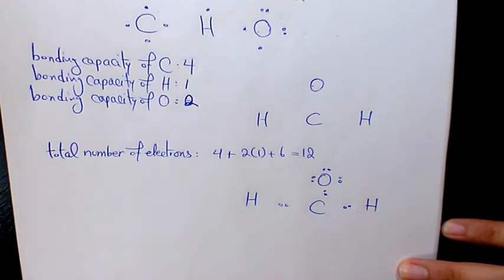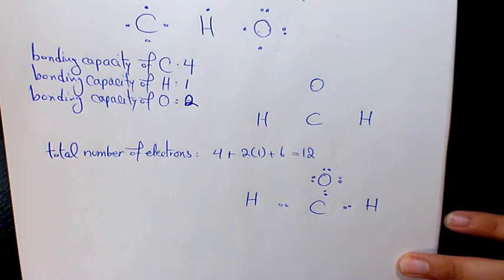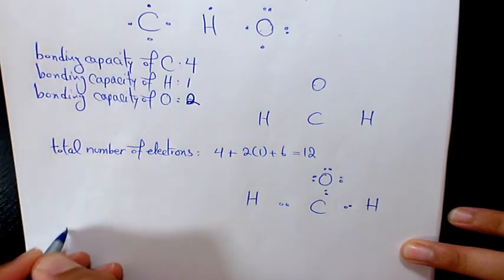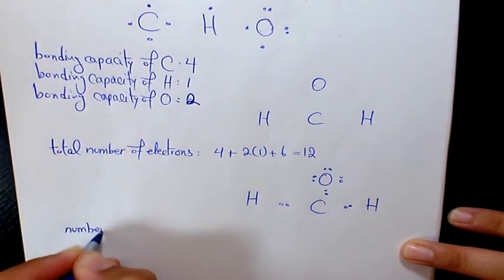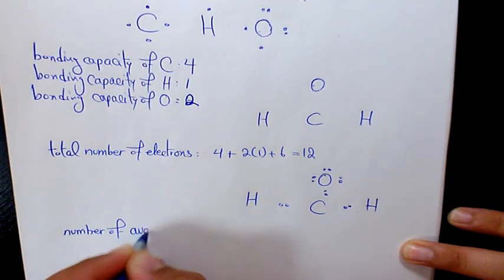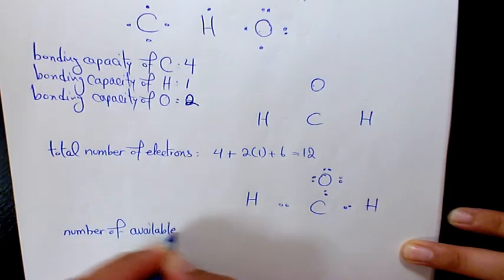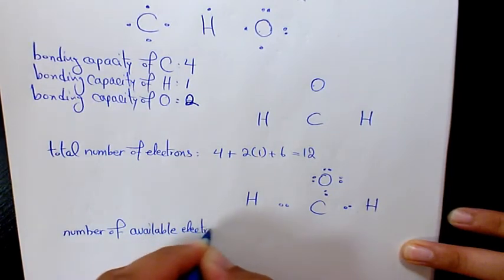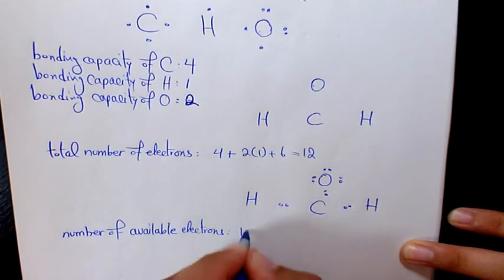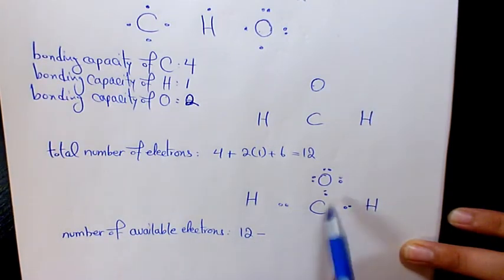Then next step would be determine how many electrons are still available by subtracting the number of electrons you have used so far from the total number of valence electrons. So number of electrons is going to be 12 minus 1, 2, 3, 4, 5, 6. 6 times 2, 12. So there is no more available electrons.